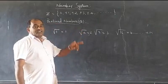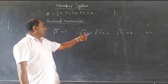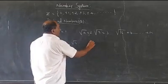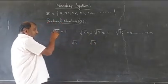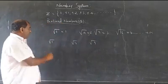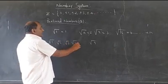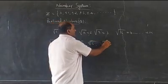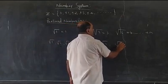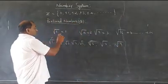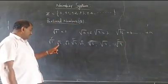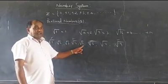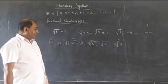We have square root of 1, square root of 4, square root of 9, and so on. In between, some others are missing. For example, square root of 2, square root of 3, square root of 5, square root of 6. These are not perfect square roots — we cannot get a perfect value for them.